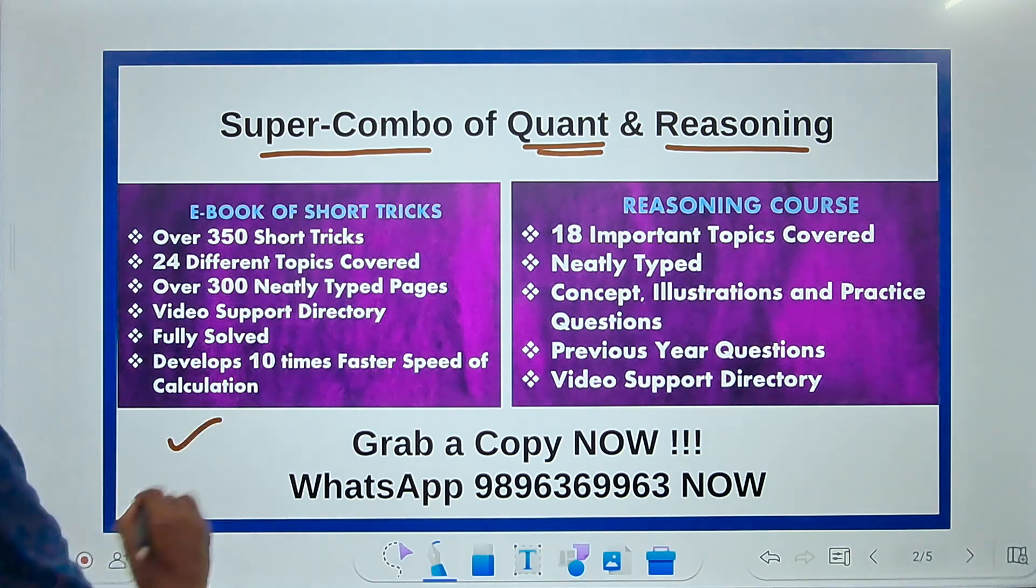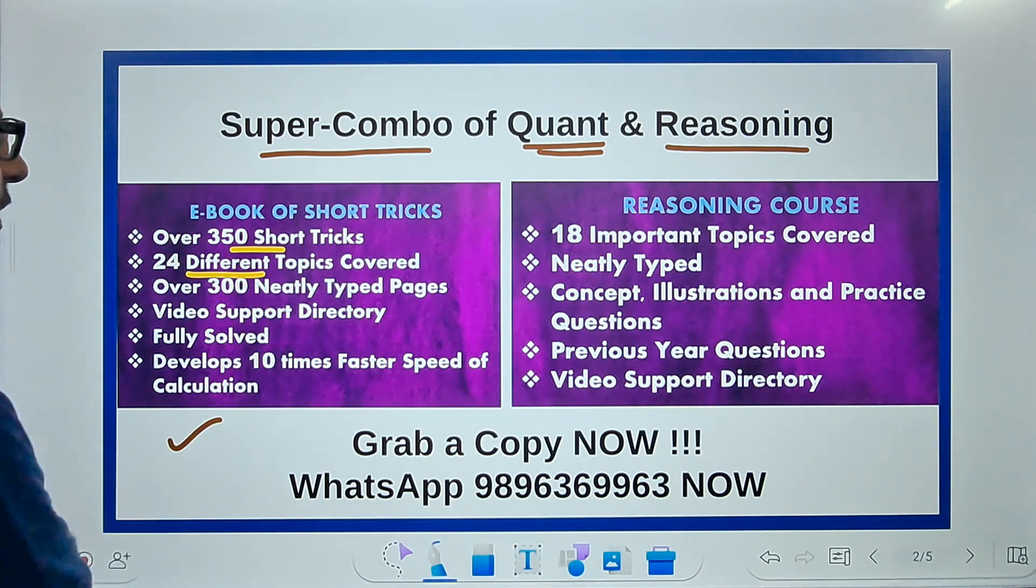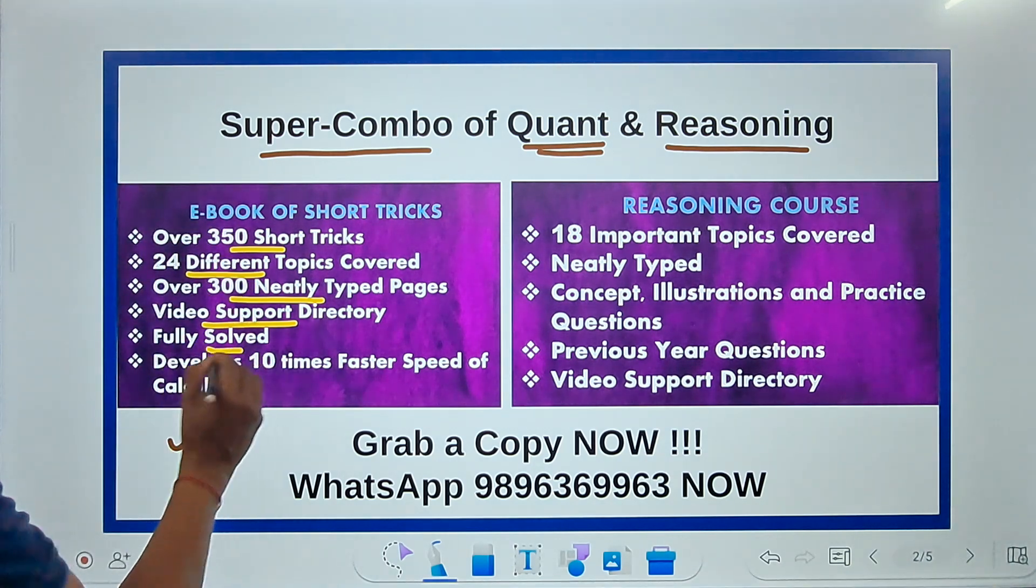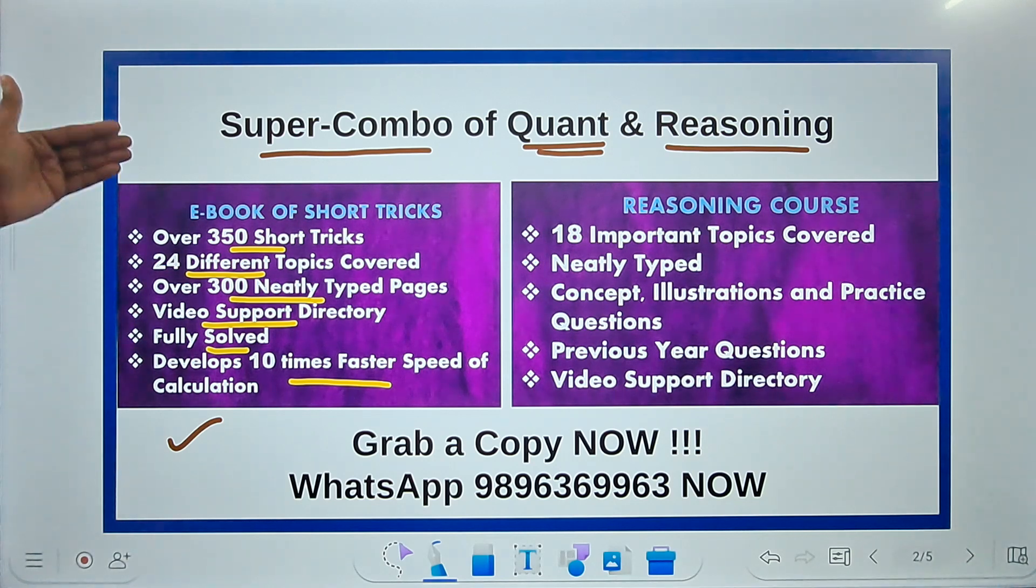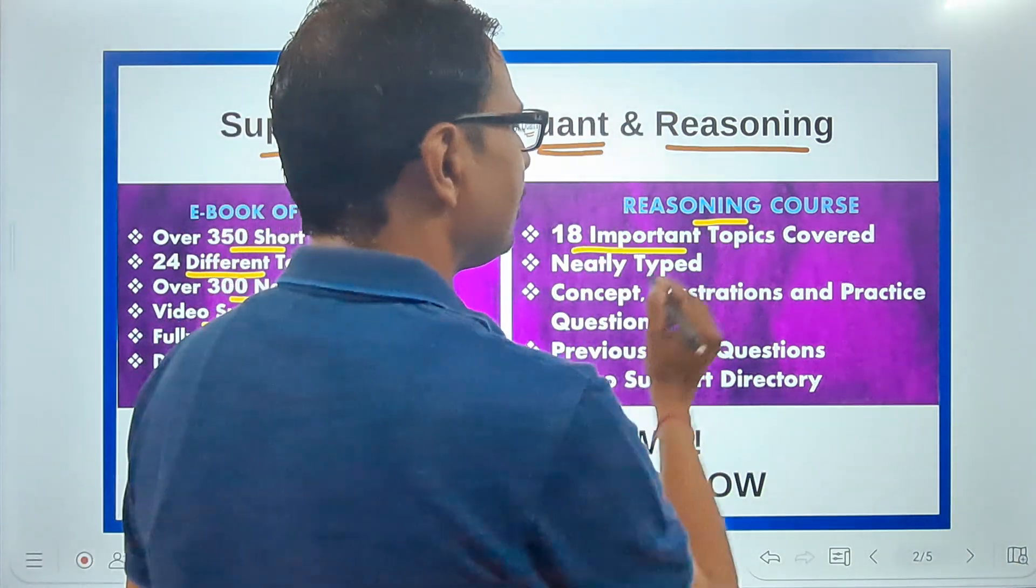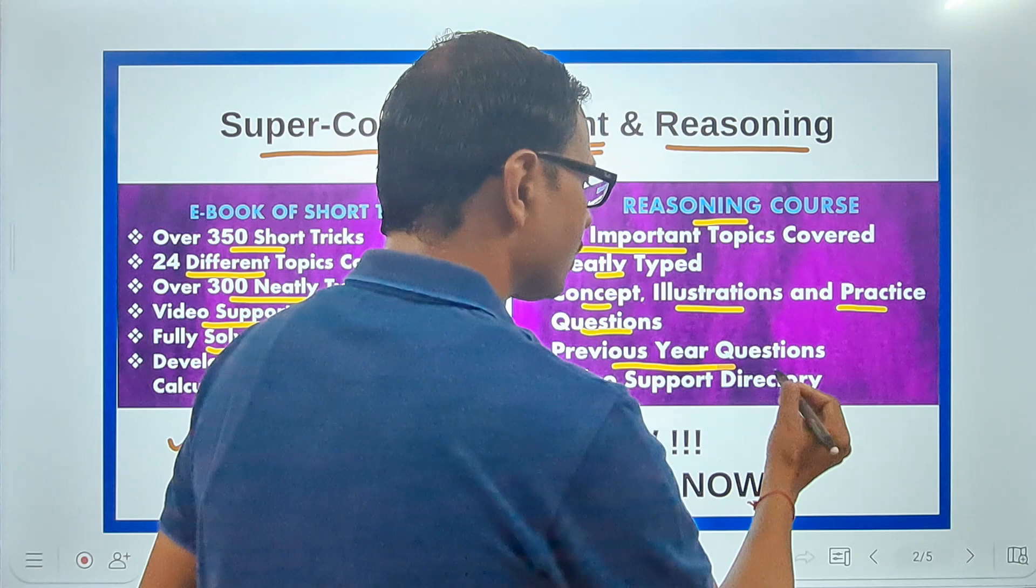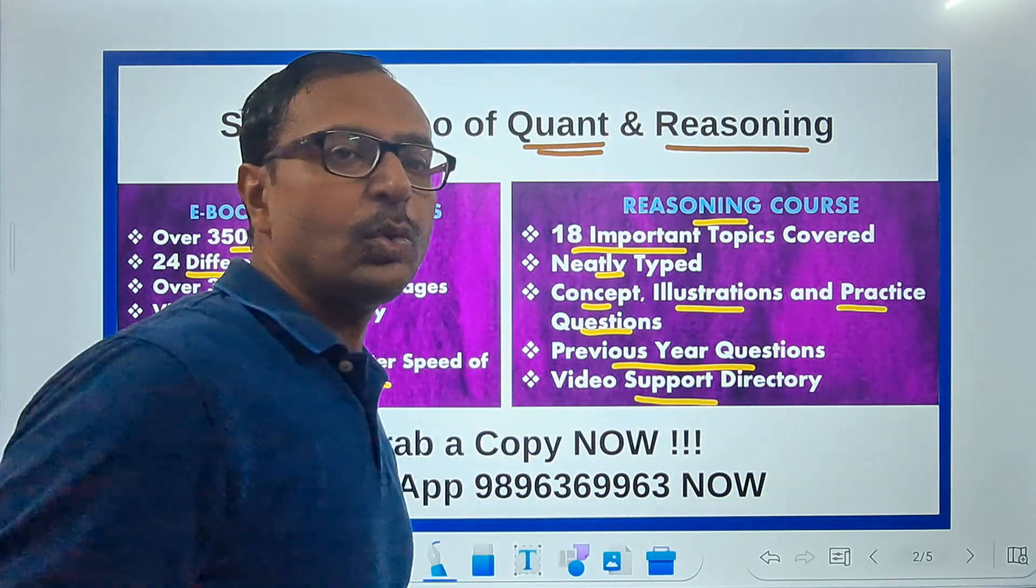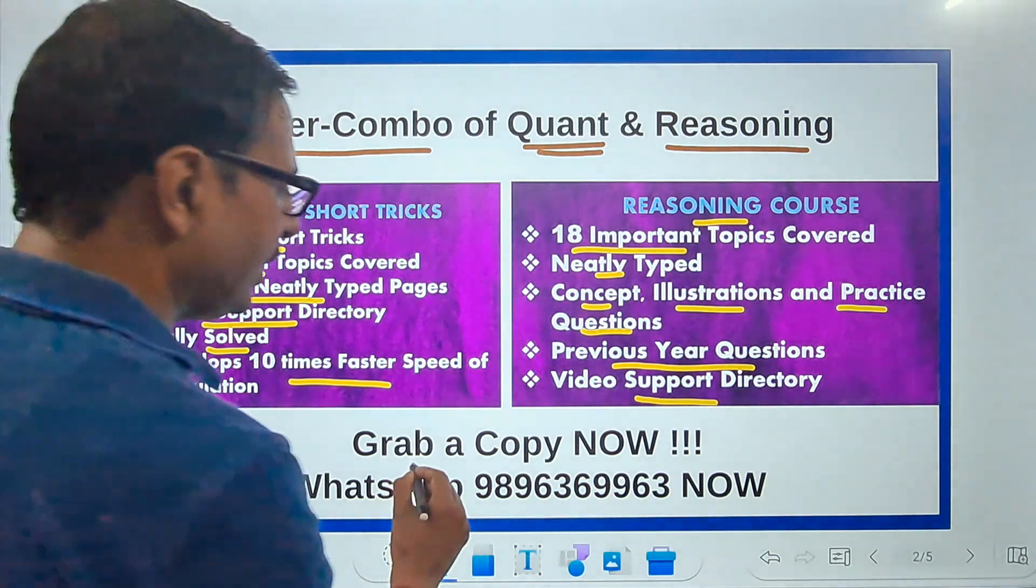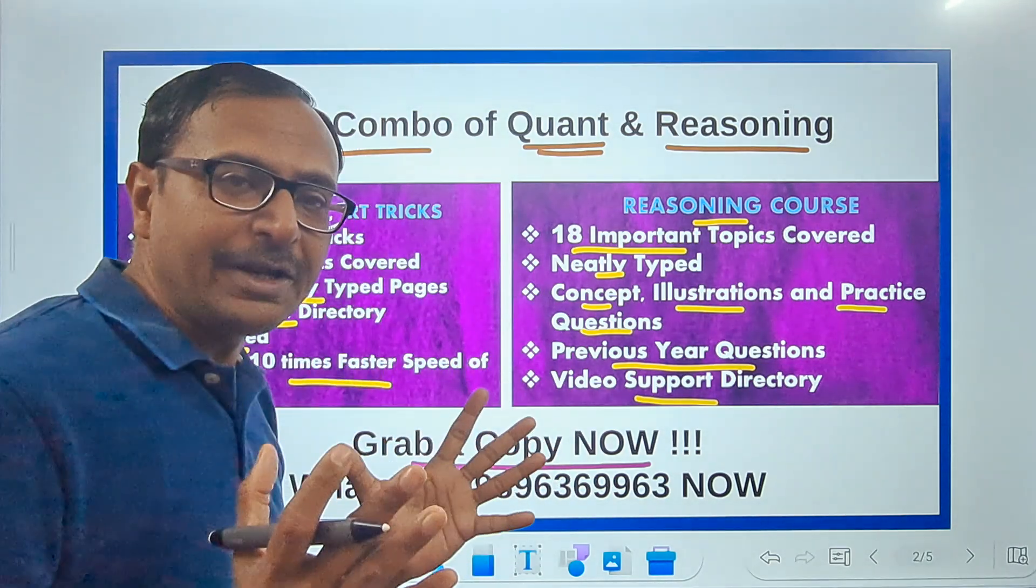We have this ebook with over 350 short tricks, 24 different topics covered, 300 neatly typed pages, video support. If you don't understand something, click and watch the video, fully solved, and develop 10 times faster speed of calculations. Then we have the reasoning course, 18 different topics covered, neatly typed concepts, illustrations and practice questions, also previous year questions with answer key and video support directory.